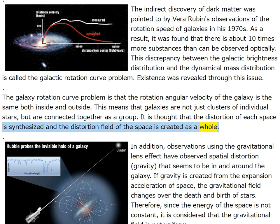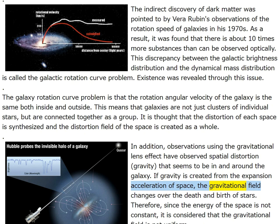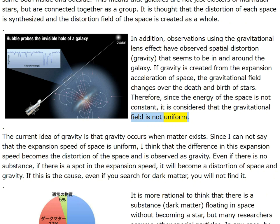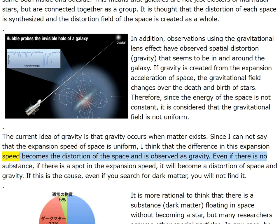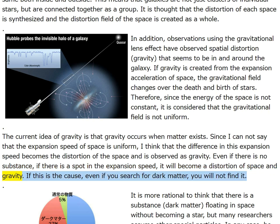It is thought that the distortion of each space is synthesized, creating a distortion field of space as a whole. Observations using the gravitational lens effect have observed spatial distortion — gravity that seems to be in and around the galaxy. If gravity is created from the expansion acceleration of space, the gravitational field changes over the death and birth of stars; since the energy of space is not constant the gravitational field is not uniform. The difference in expansion speed becomes the distortion of space and is observed as gravity. Even if there is no substance, if there is a spot in the expansion speed it will become a distortion of space and gravity — so if this is the cause, even if you search for dark matter you will not find it.